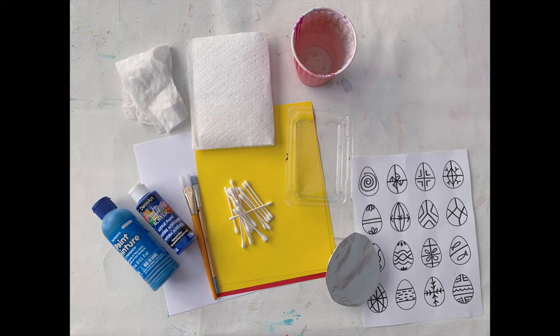Some Q-tips, a plastic tray or piece of cardboard or wax paper to put our paint on, some brushes to spread the paint on our monoprinting plate, and we'll be using whatever kind of paint you have in your home.